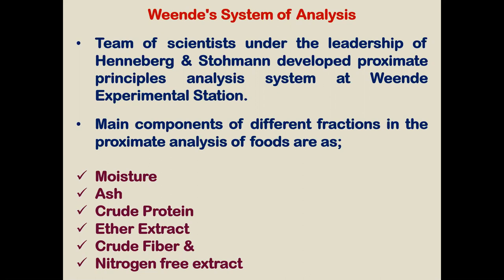Out of these, we can analyze moisture, total ash, crude protein, ether extract, and crude fiber in the laboratory. After analyzing these, we can calculate the nitrogen-free extract. So nitrogen-free extract can be calculated from these parameters. These are the six main component fractions of the proximate analysis.